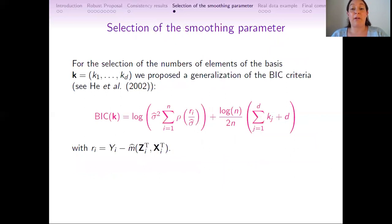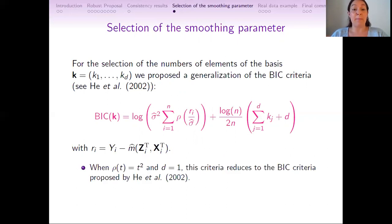For the selection of the number of elements of the basis, that is k_1 to k_d, we proposed a generalization of the BIC criteria. When the robust function involved in this formula is taken equal to the square function and d equals 1, this criteria reduces to the BIC criteria proposed by He et al. 2002.